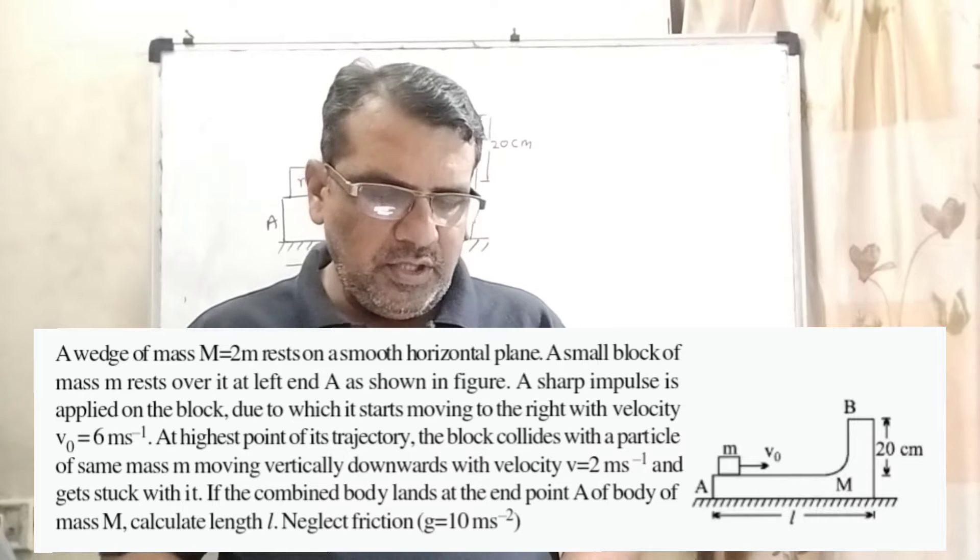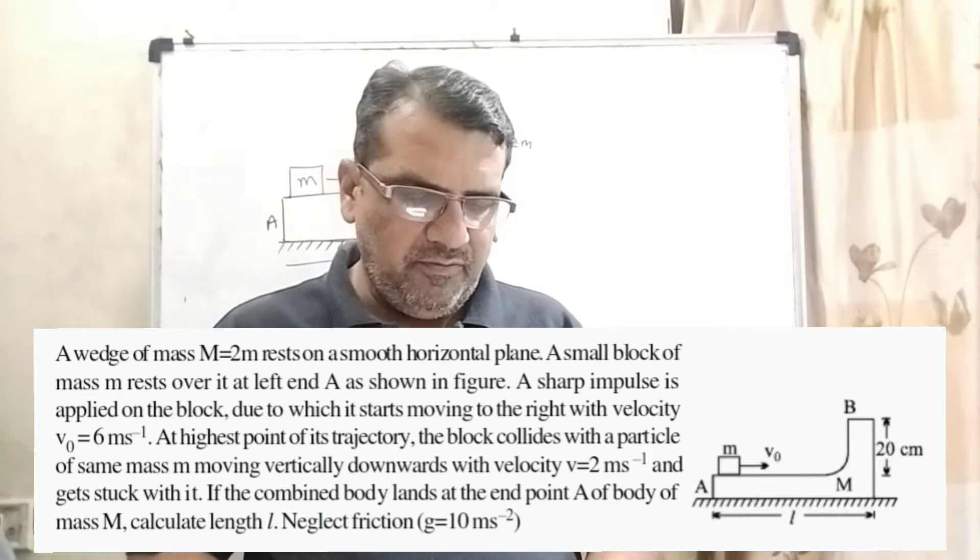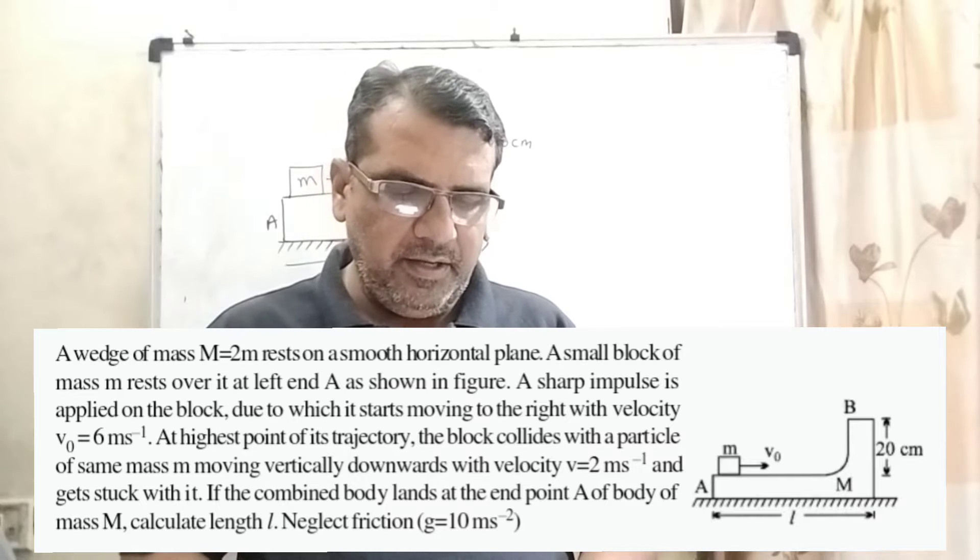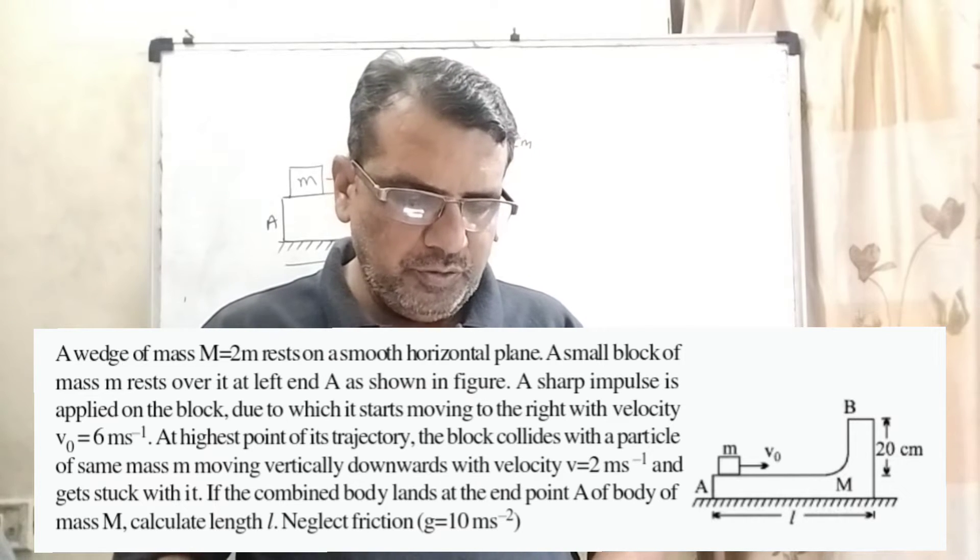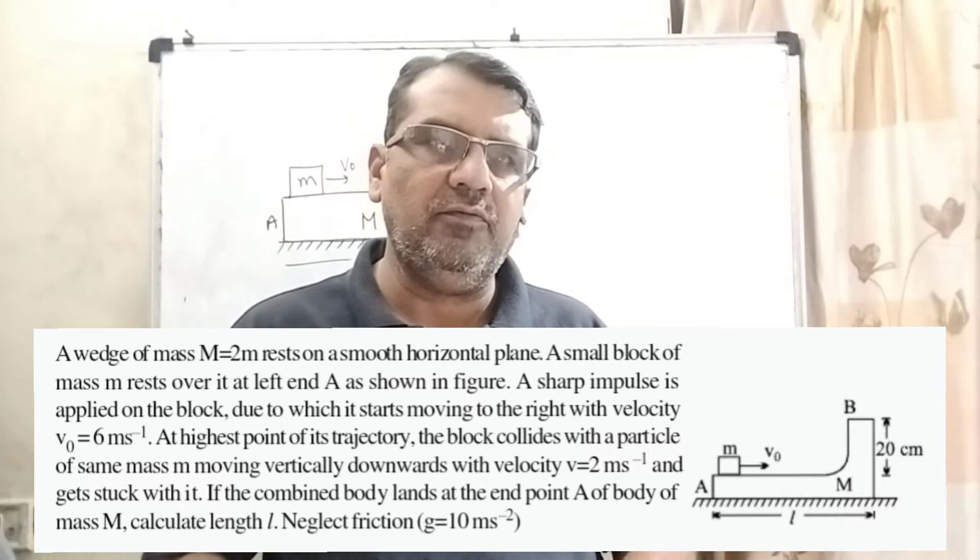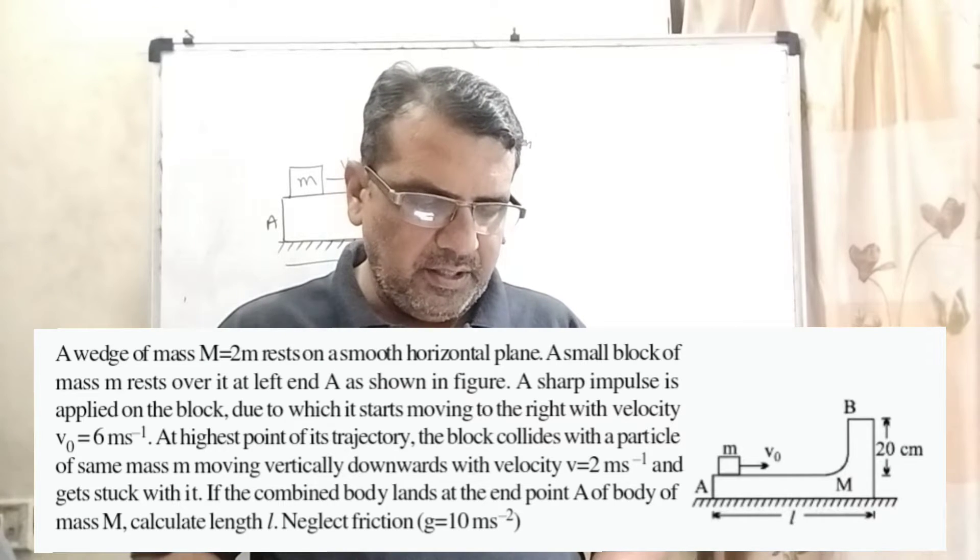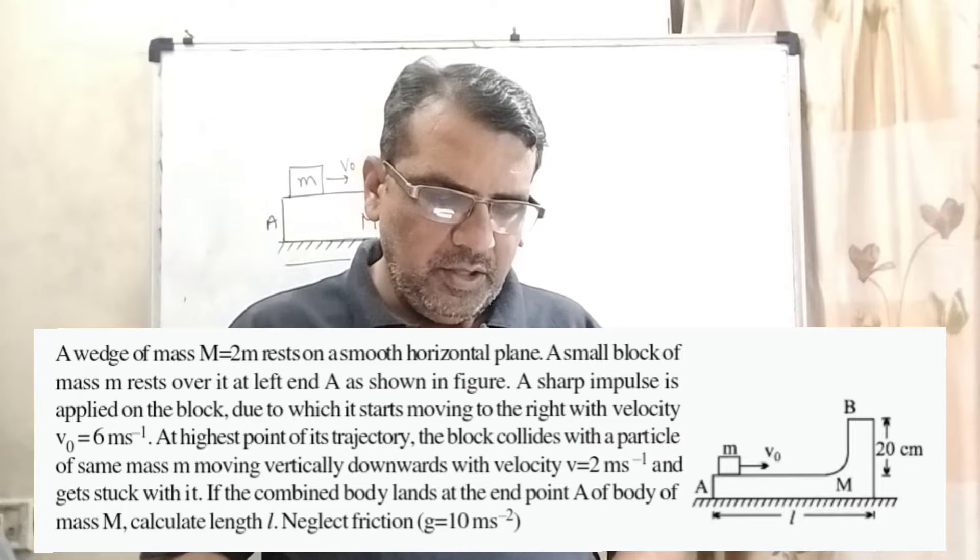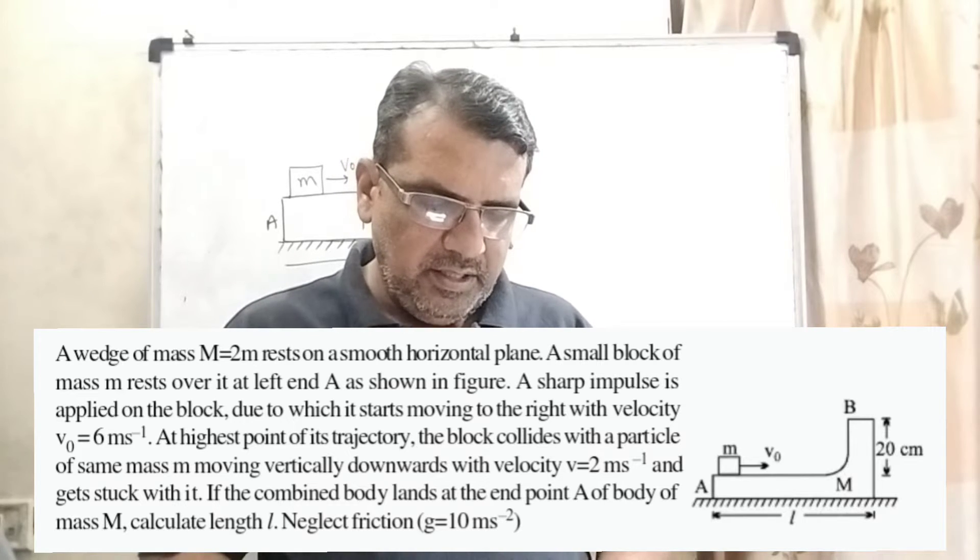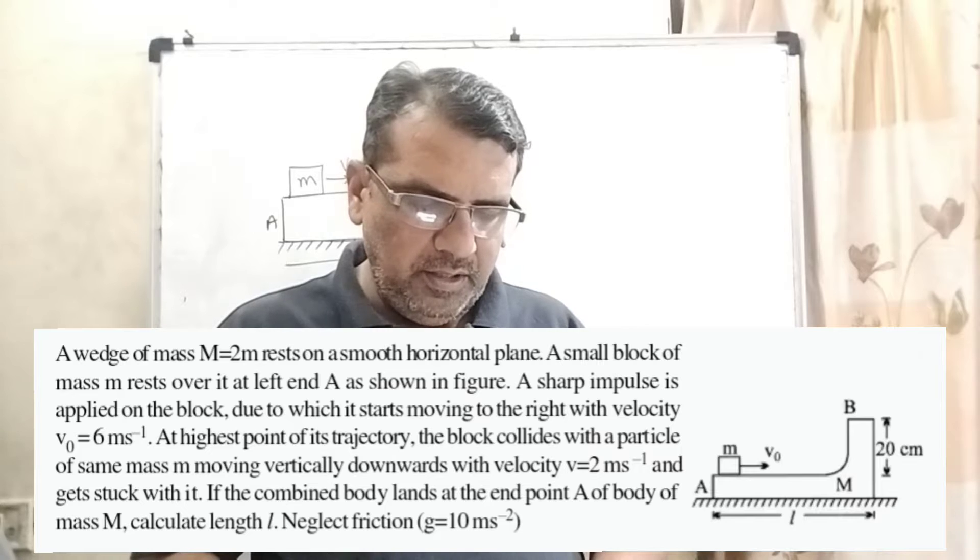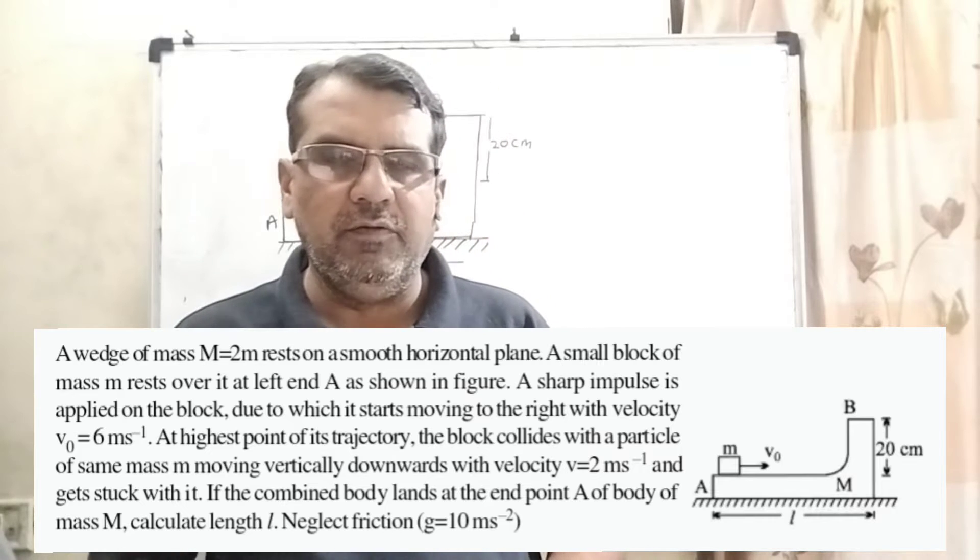Now here is the question. A wedge of mass capital M equal to 2m rests on a smooth horizontal plane. A small block of mass small m rests over A at left end A as shown in figure. A sharp impulse is applied on the block due to which it starts moving to the right with velocity v0 equal to 6 meter per second. At highest point of its trajectory, the block collides with particle of same mass small m moving vertically downward with velocity v equal to 2 meter per second and gets stuck with it. If the combined body lands at the end point A of body of mass capital M, calculate length small l. Here neglect friction and put g equal to 10 meter per second.